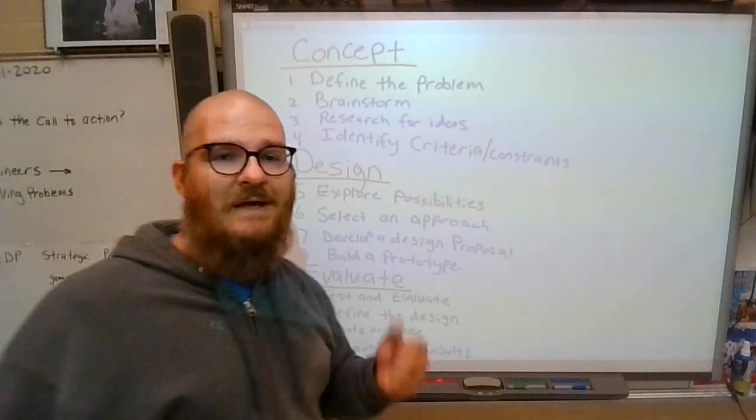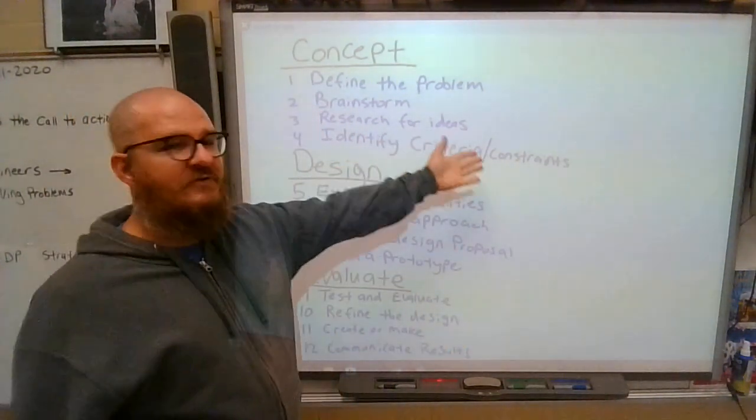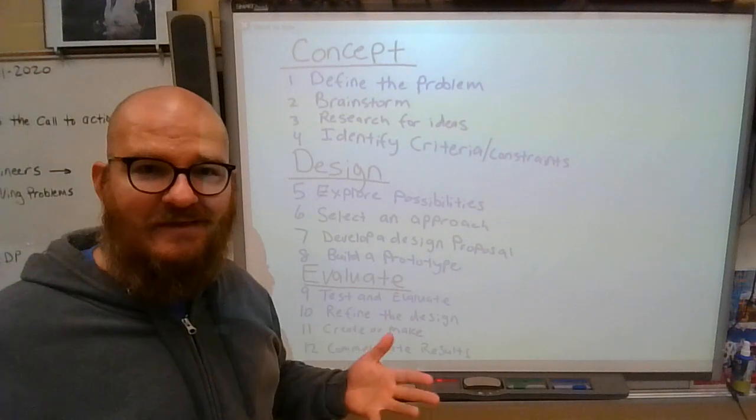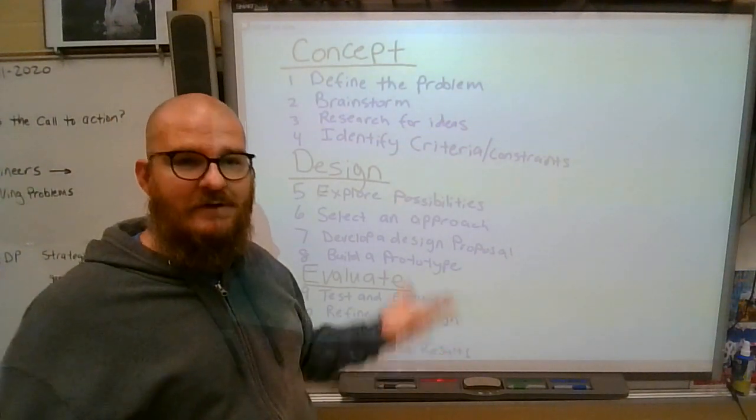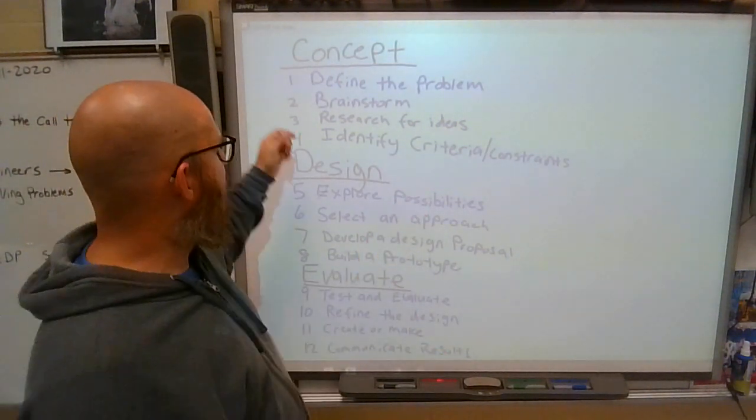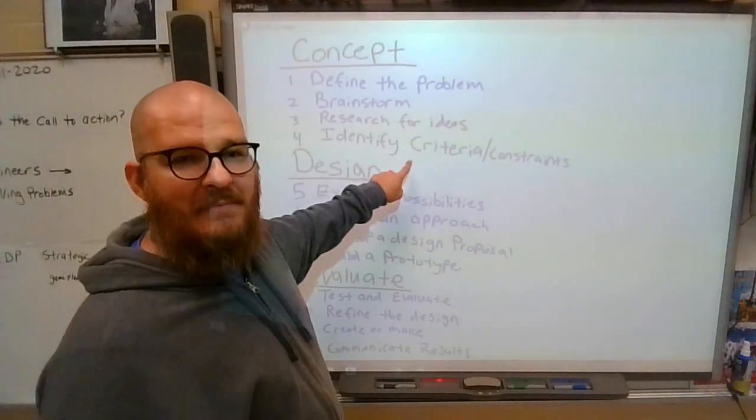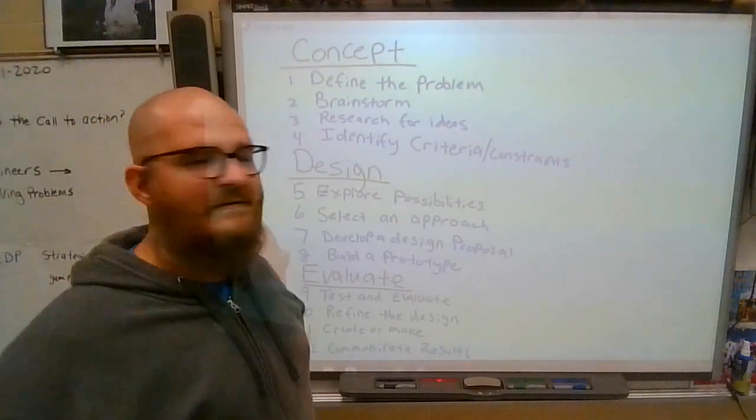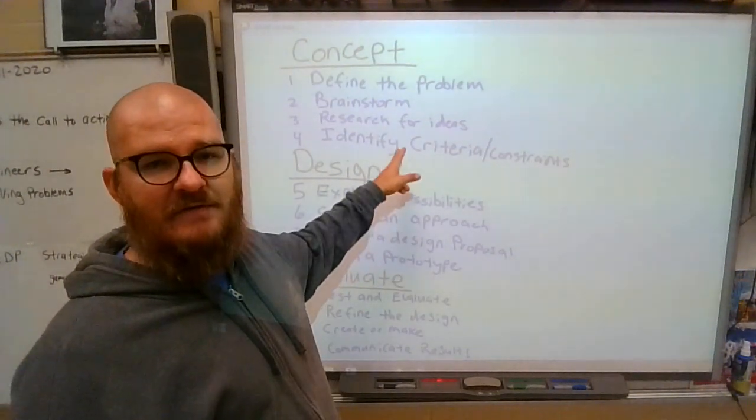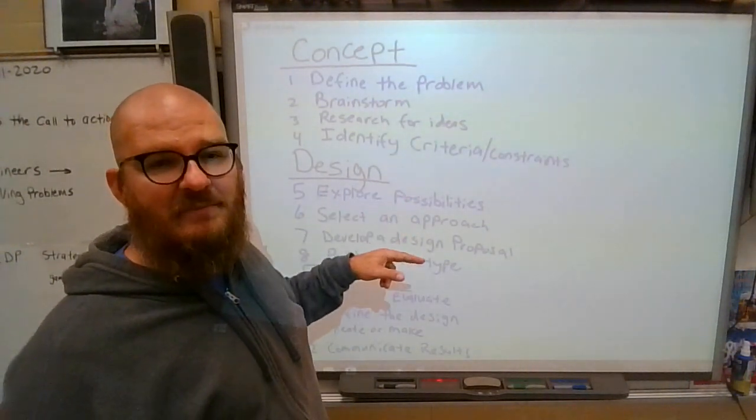The criteria might be I want a hamburger. So a constraint would be more towards monetary things like I don't want to spend fifty dollars. Well, Texas Roadhouse would be out. When you explore possibilities, you look for what meets your criterion constraints. Chick-fil-A doesn't have a hamburger so that doesn't meet it. So that's not a possibility.